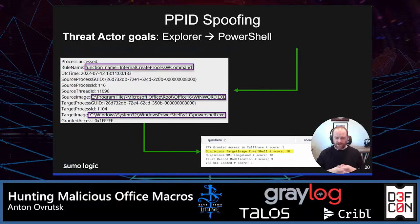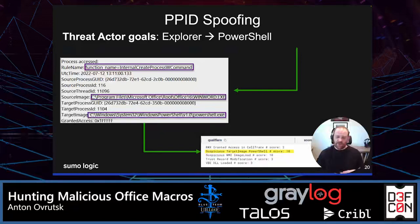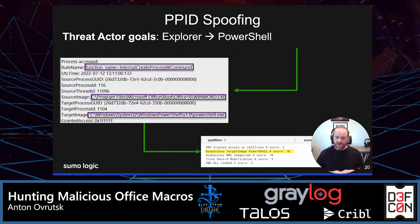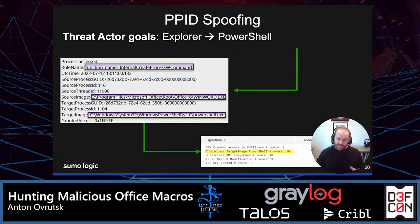Another technique worth calling out specifically is PPID spoofing. Similar to WMI, the goal is to break the process relationship chain. This particular PPID spoofing macro makes it look like PowerShell spawned from Explorer as opposed to WinWord. However, if we look at the process access events and the right function calls, we can see the real parent process of PowerShell, which in this case is WinWord. So if we see a mismatch between Event ID 10 and Event ID 1, it may be PPID spoofing taking place. We could add this logic to our qualifier query and score it appropriately.